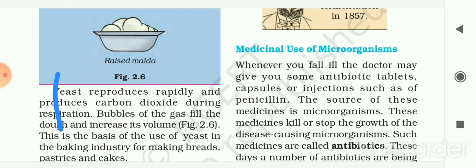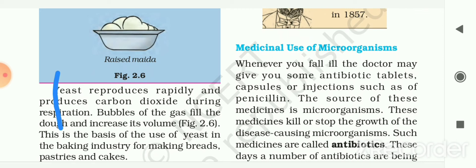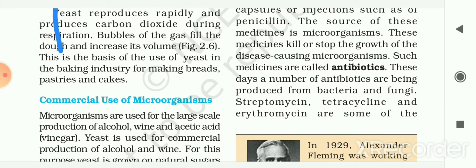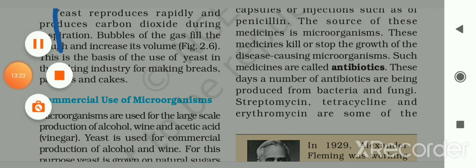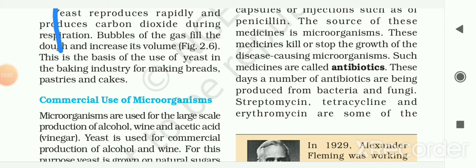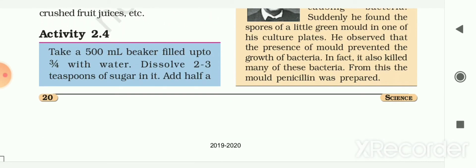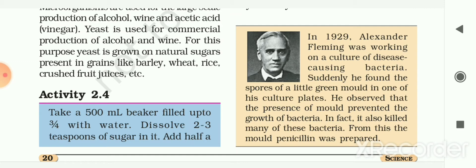The next use is the medicinal use of microorganisms. Whenever you fall ill, the doctor may give you antibiotic tablets, capsules, or injections such as penicillin. The source of these medicines is microorganisms. These medicines kill or stop the growth of disease-causing microorganisms, and such medicines are called antibiotics. A number of antibiotics are produced from bacteria and fungi. Streptomycin, tetracycline, and erythromycin are some commonly used antibiotics made from fungi and bacteria.